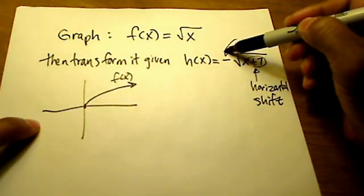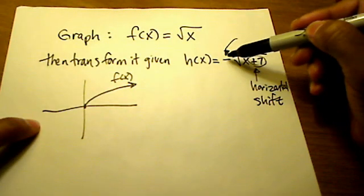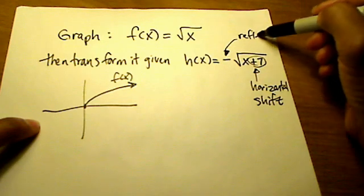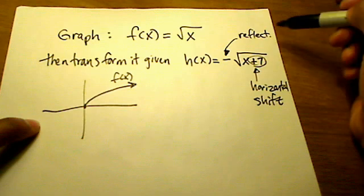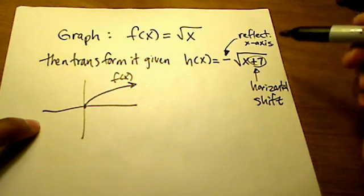And this negative sign that's outside of the square root that's not directly affecting the x but outside of the function is a reflection. It's a reflection over the x-axis and that's also important.